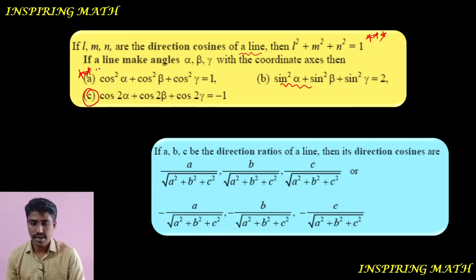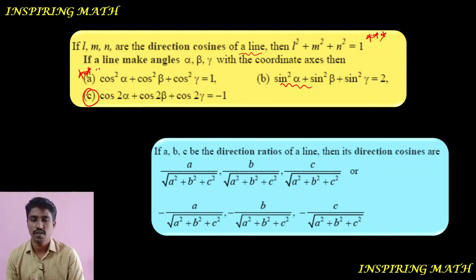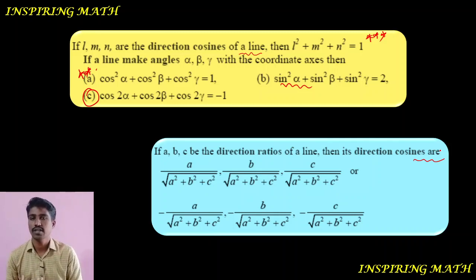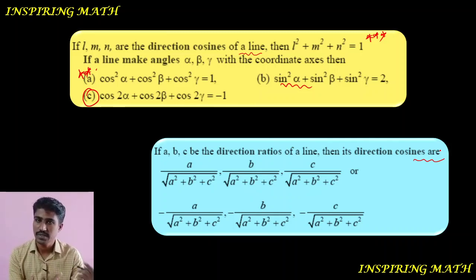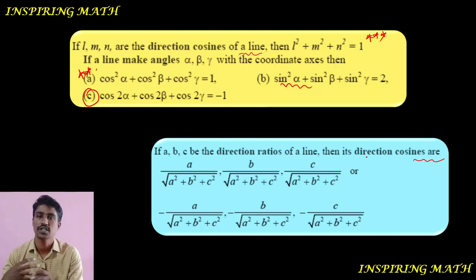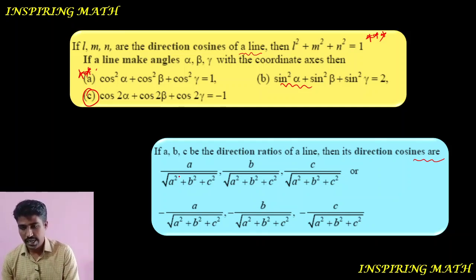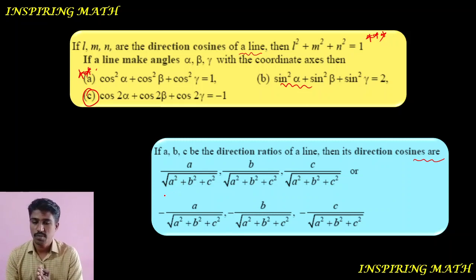Next point: if a, b, c are the direction ratios of a line, then its direction cosines are equal to a/√(a²+b²+c²), b/√(a²+b²+c²), and c/√(a²+b²+c²). I will explain this in the chapter on vector ratios — direction ratios to direction cosines.